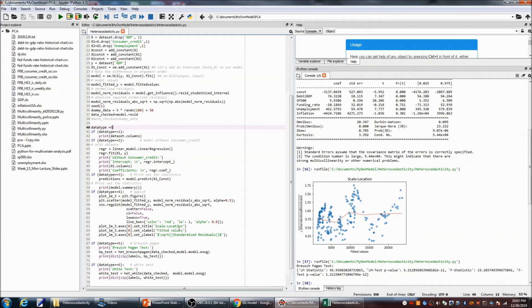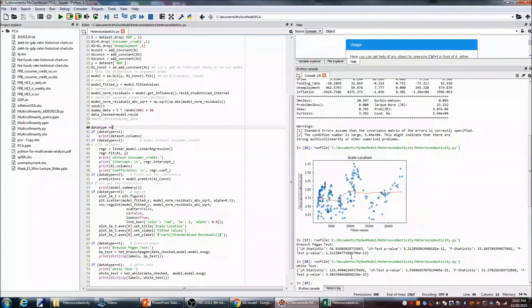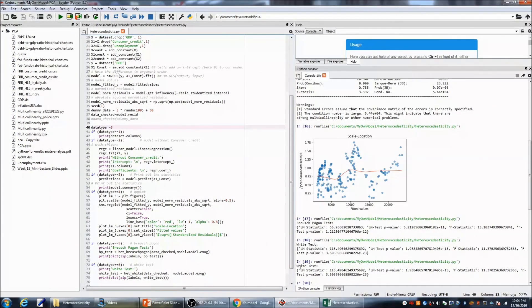How about White test? With White test, we got similar results. The LM test p-value is very small, and also the f-test p-value is very small. So, we do have heteroscedasticity for this model.